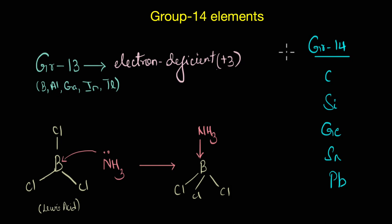Now based on this, what can you comment on the nature of the group 14 elements in their group oxidation state which is plus 4? Would the compounds of these elements act as electron rich or electron deficient species?